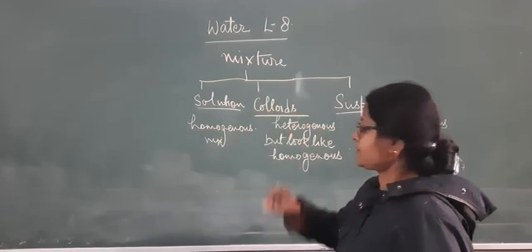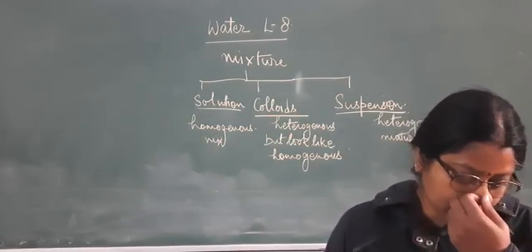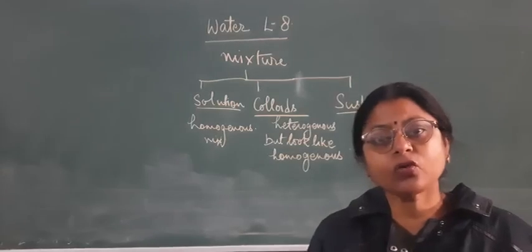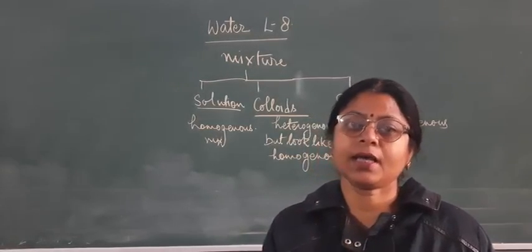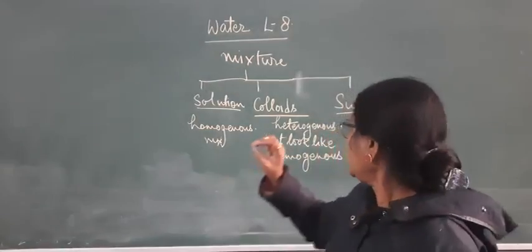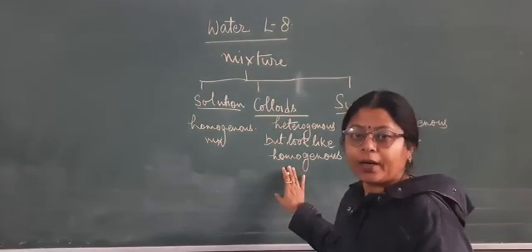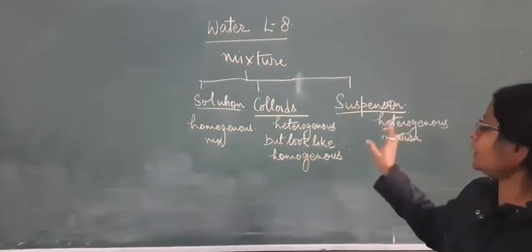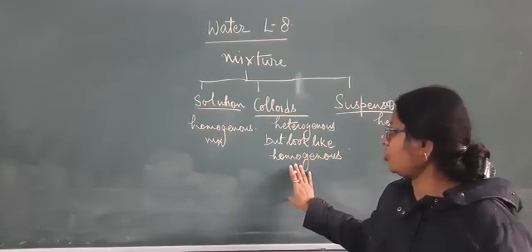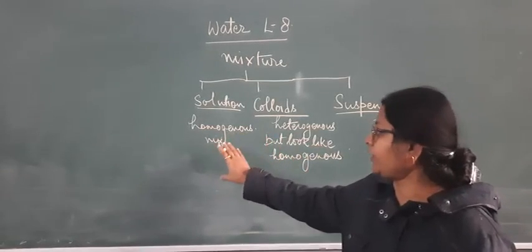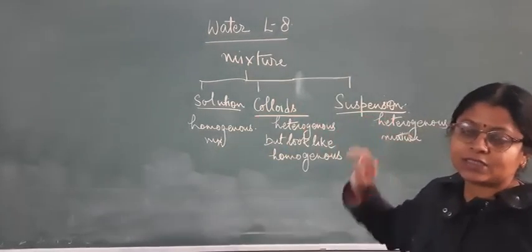The next type of mixture is colloids. Colloids are also a heterogeneous mixture but look like homogeneous because the solute particle size is comparatively larger than in a solution but smaller than in a suspension. The size of the solute particle is intermediate between solution and suspension.